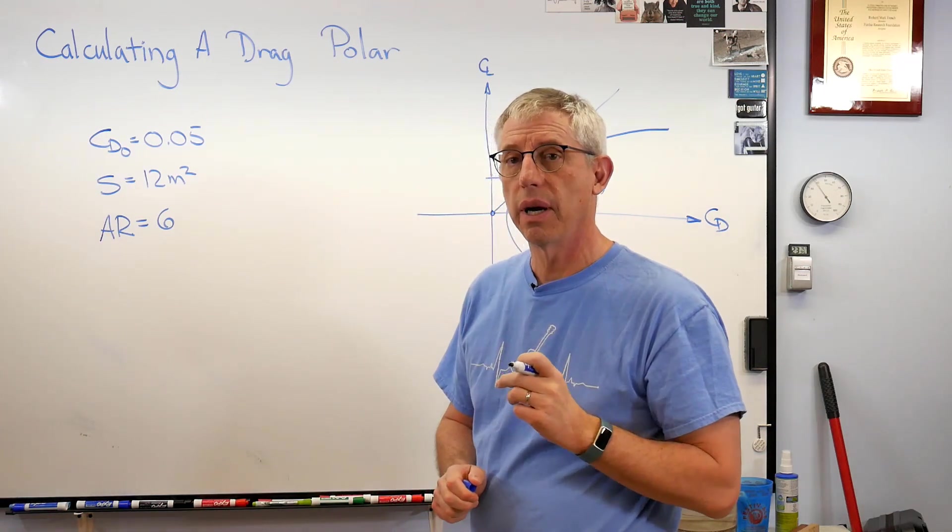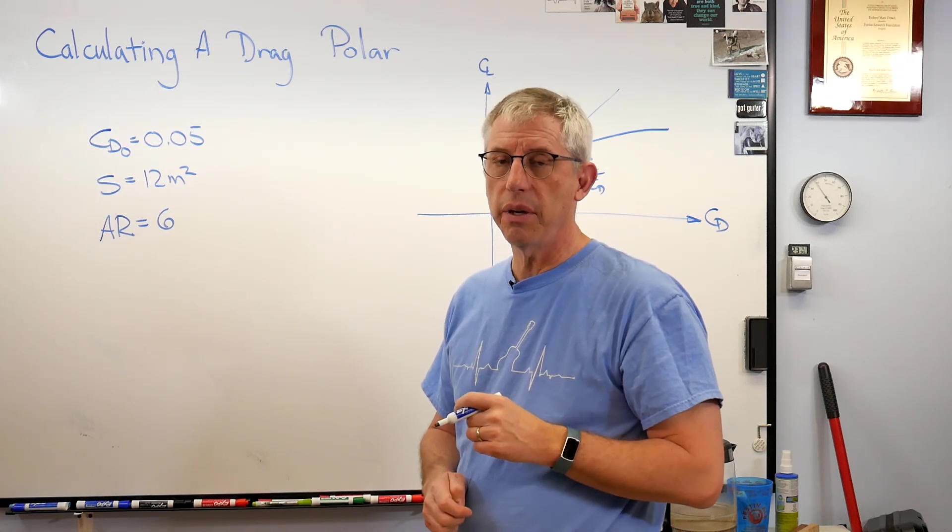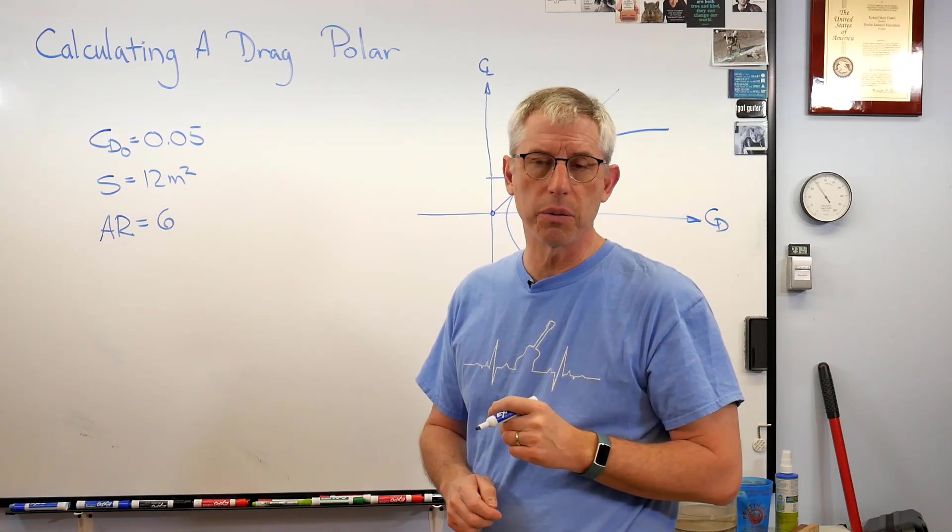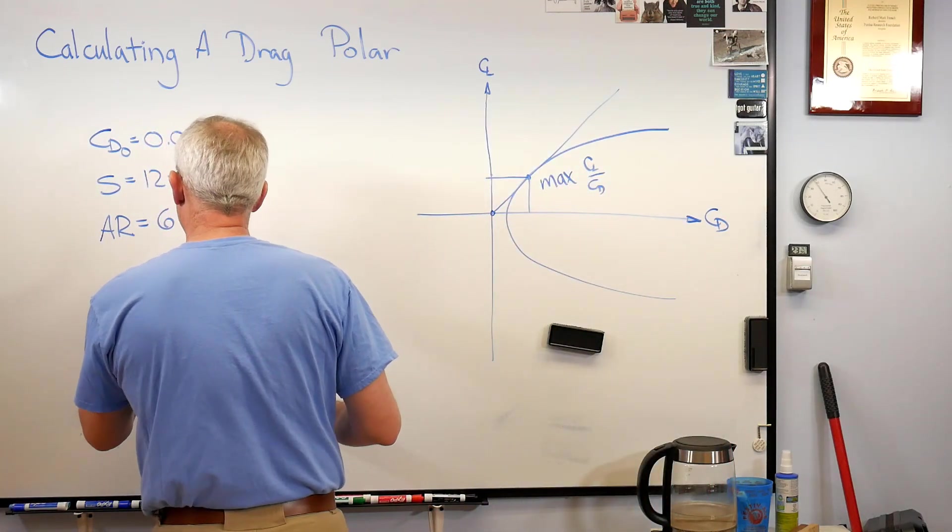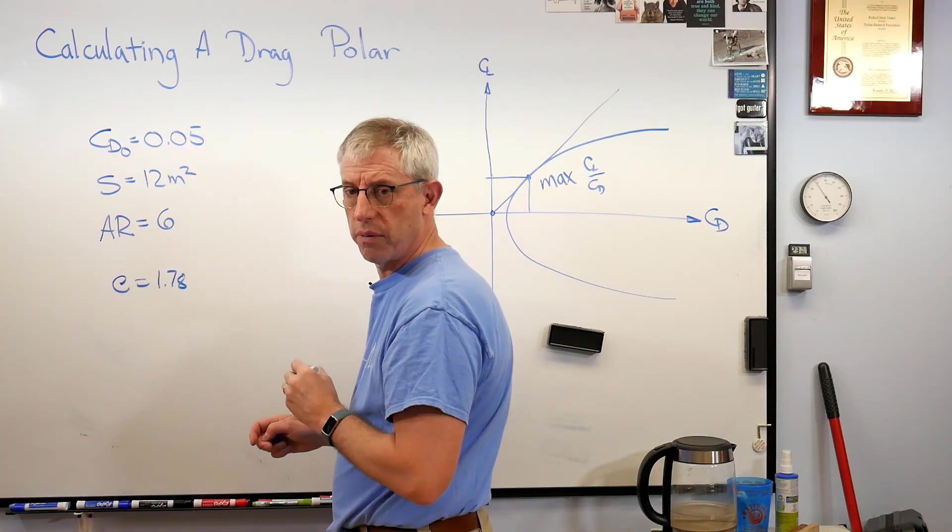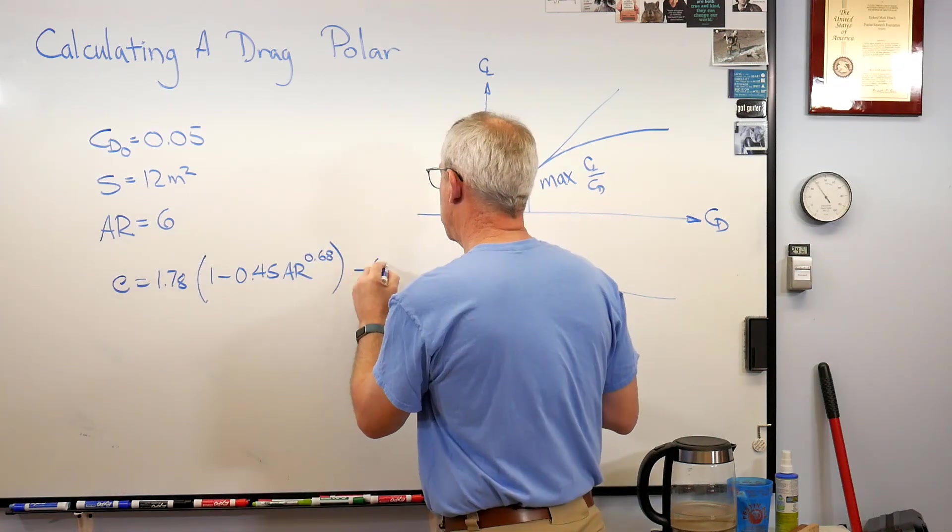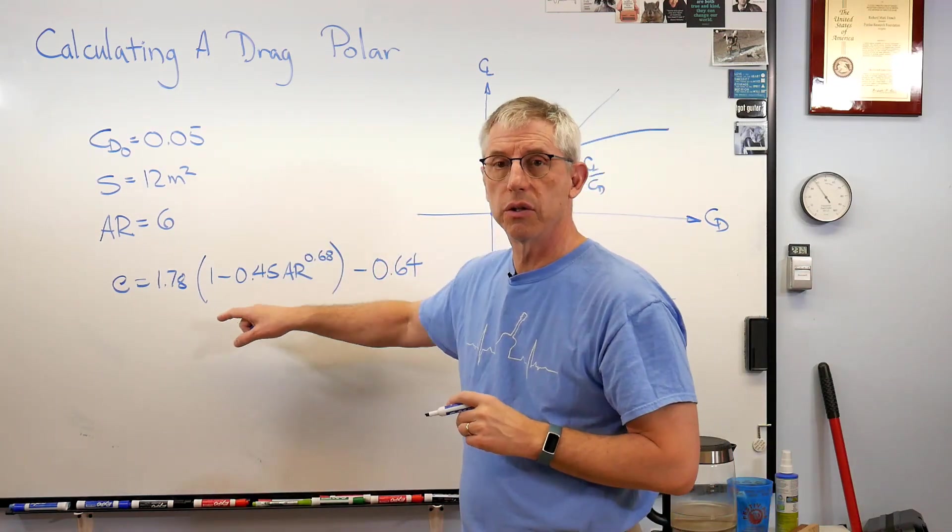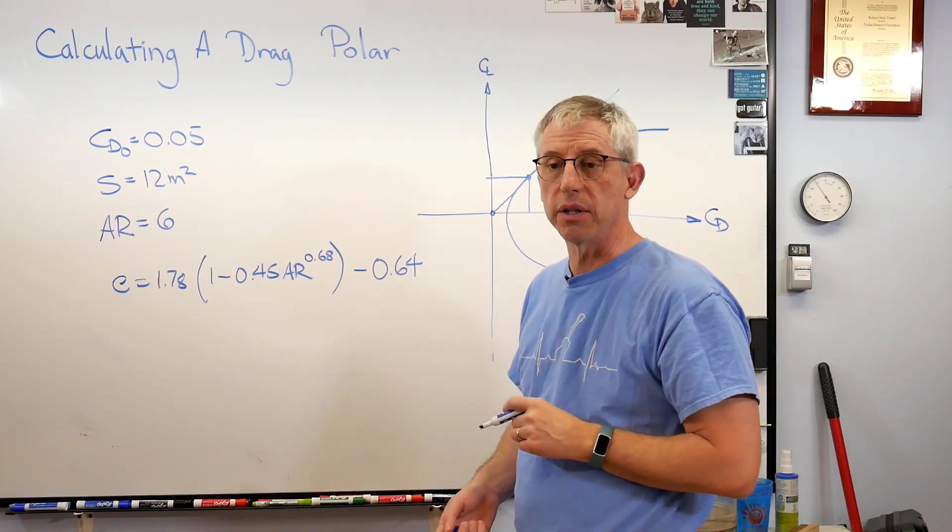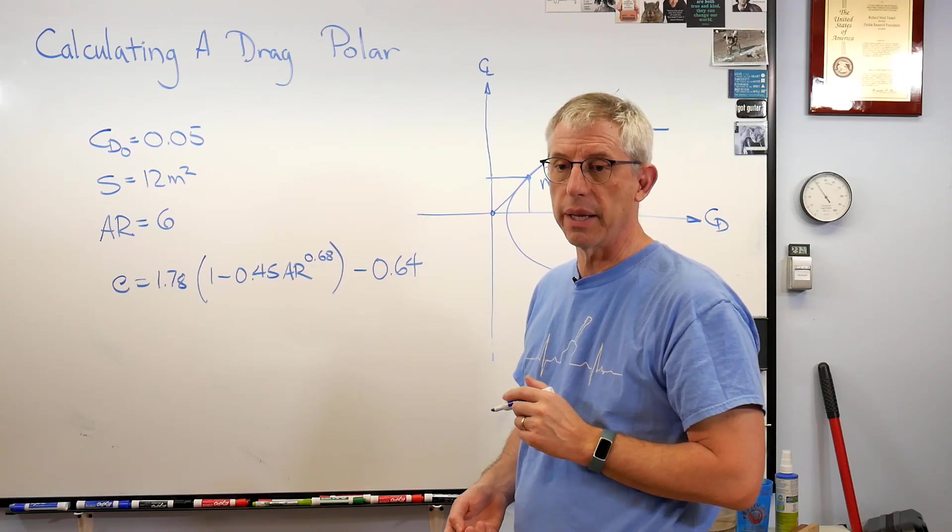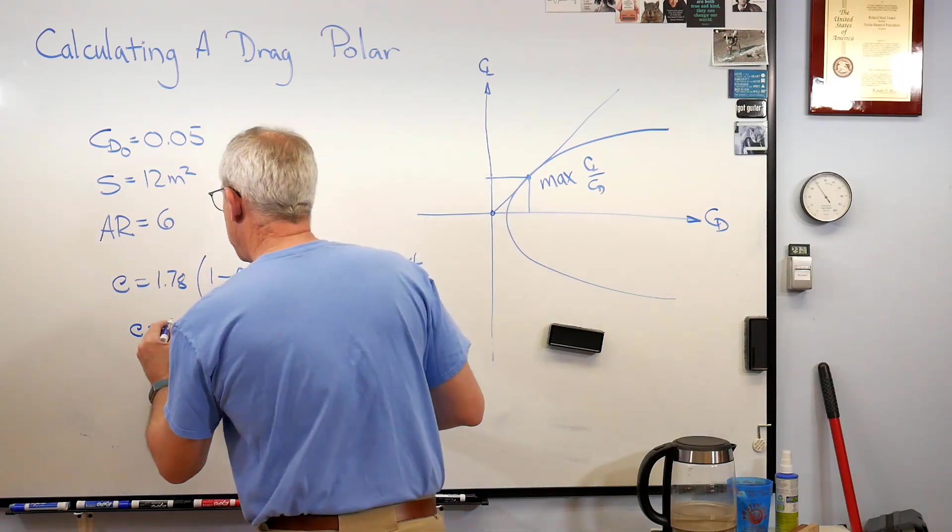We need to know Oswald efficiency factor. You can look it up, you can test it, but there is a nifty curve fit for this. This is in Dan Raymer's book on aircraft design, so check that out. E is 1.78. This is a curve fit based on studying lots and lots of airplanes and it's surprisingly accurate. It's pretty handy to get a closed-form result like that. So from this I get e of 0.869.